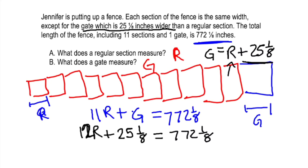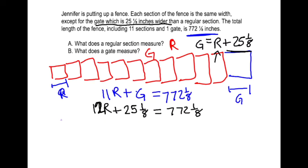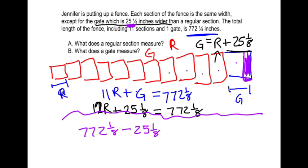Numerically, if I only look at the numbers, I'm going to want to do this. Let me start with my 772⅛. Let me subtract out the extra space that the gate has. If I subtract out that extra space, then it's like I have 12 regular sections. So I'm going to divide that by 12. That is a numerical expression that could be used to solve for R, regular section.